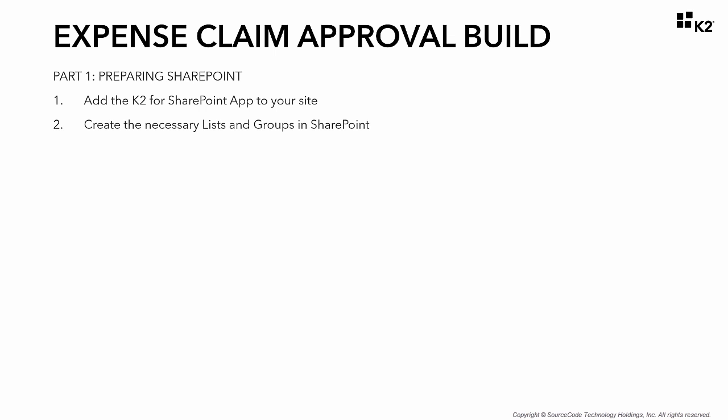Keep in mind that exposing the K2 Worklist somewhere is always a good idea so that users have a central place where they can see all their outstanding K2 tasks. In Step 2, you will create and configure the various SharePoint artifacts that will support this K2 application. These include a list called Expense Claims that will host the K2 application and store the Expense Claim header data, a SharePoint group called Expense Claim Approvers for selecting the user that must approve the claim, and a group called Expense Claim Processing for routing tasks to the Finance team.